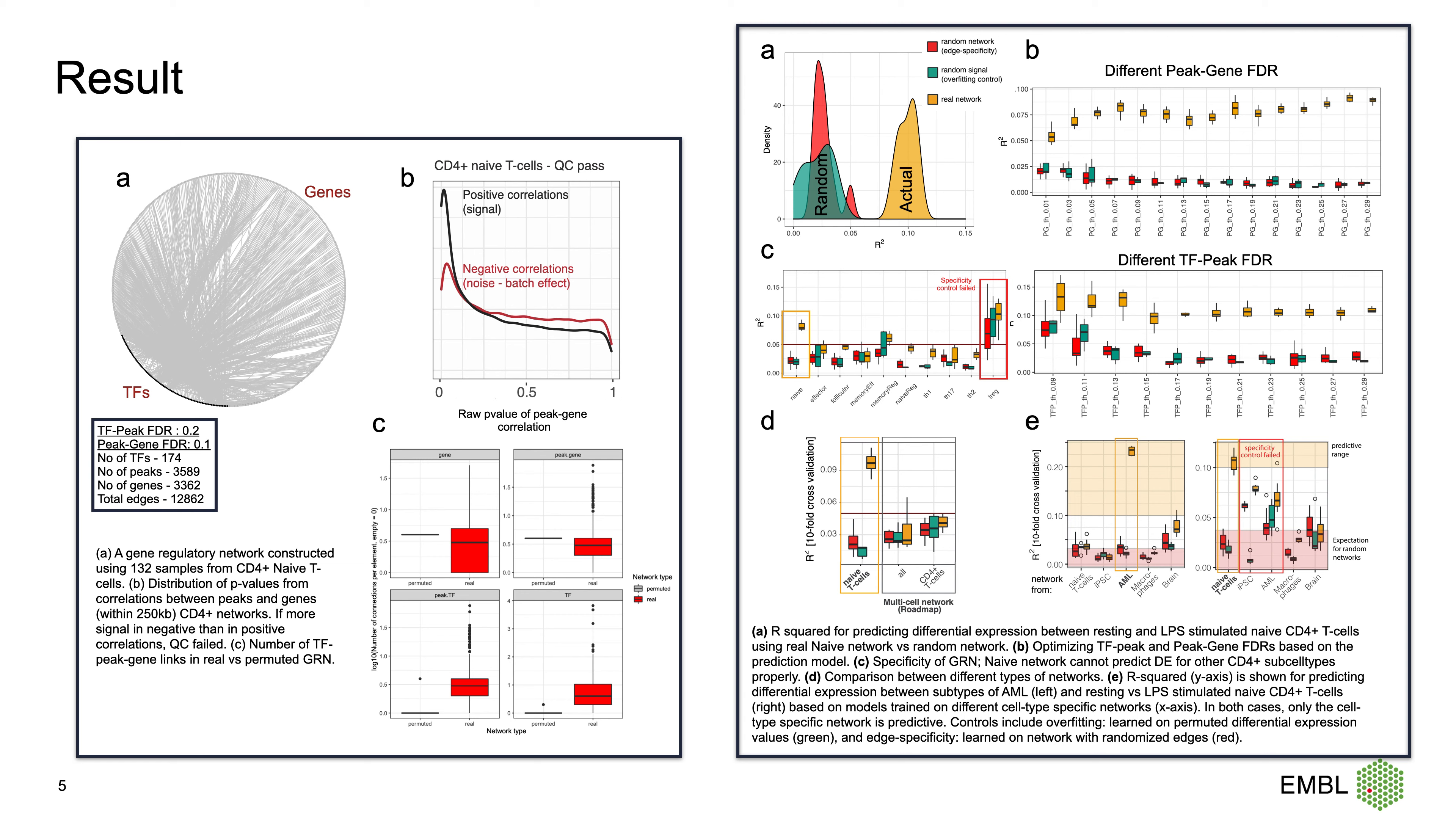And in the next part, we tested the specificity of the naive GRN by testing it against other CD4+ cell types. As you can see, only naive differential expression can be predicted by naive GRN.